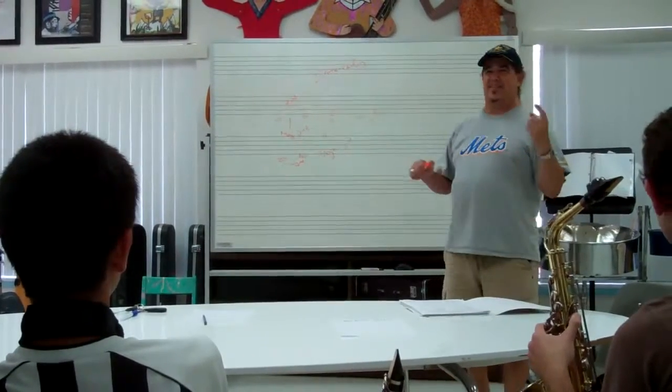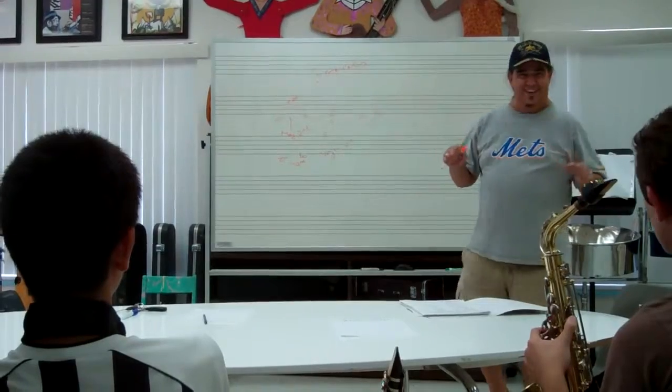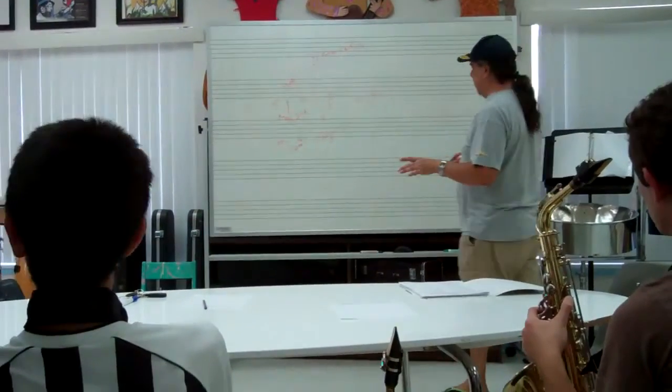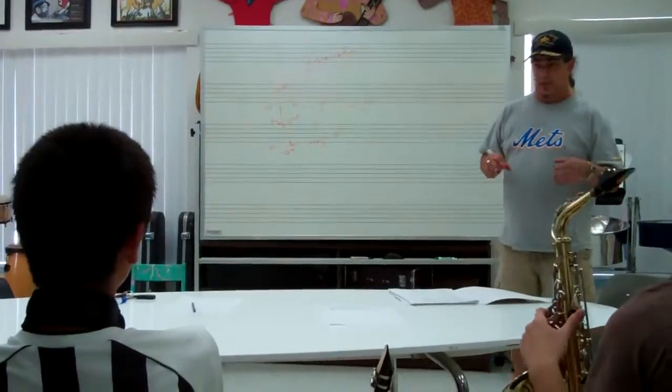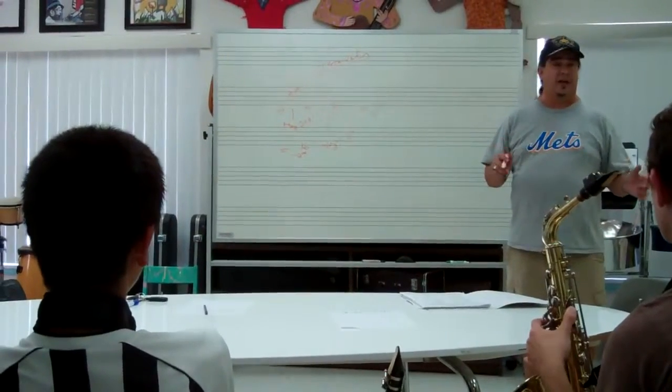The alphabet does not go A, B, C, D, E, F, B flat. It goes, you know. So A minor would be the same as, it would be the relative minor. That's pure minor.